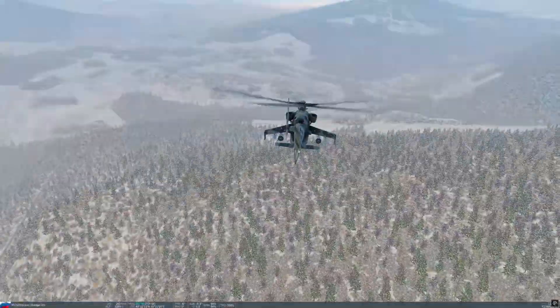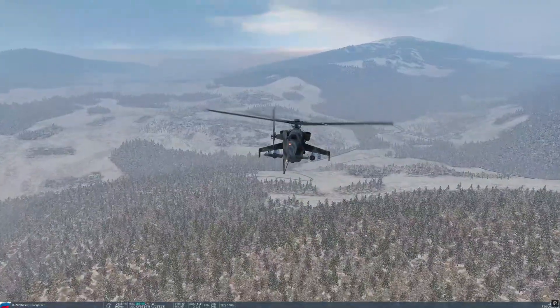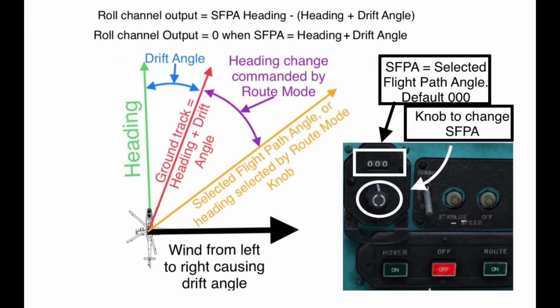Here is a graphic to represent this: the output of your roll channel is equal to the SFPA and the combined value of your heading and drift. Your roll channel will be centered when your SFPA is equal to the heading plus drift angle.